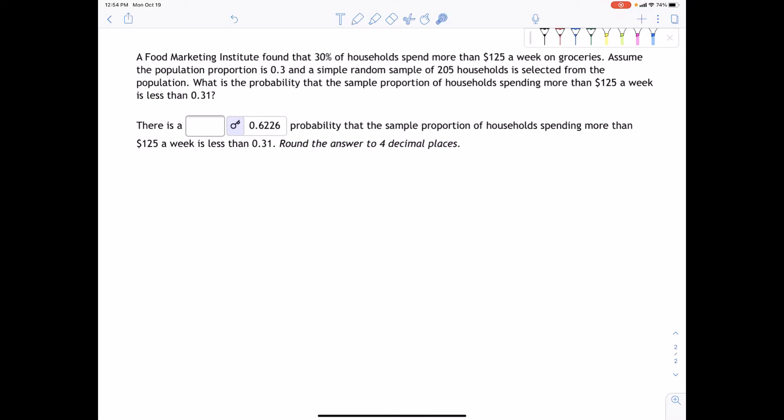A food marketing institute found that 30% of households spend more than $125 a week on groceries. Assume the population proportion is 0.3 and a simple random sample of 205 households is selected from the population. What is the probability that the sample proportion of households spending more than $125 a week is less than 0.31? Here they give us a percentage as a population parameter. There's your red flag that this is going to be a proportion.